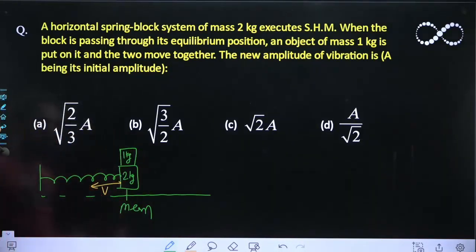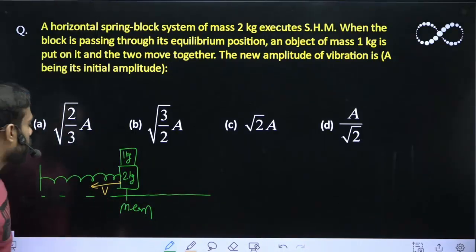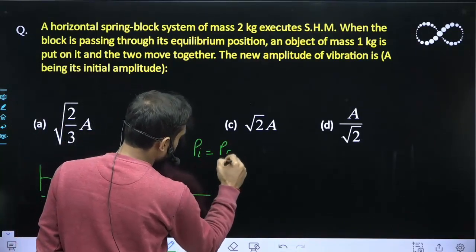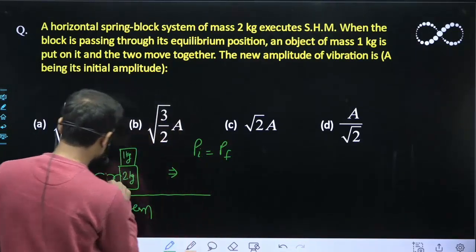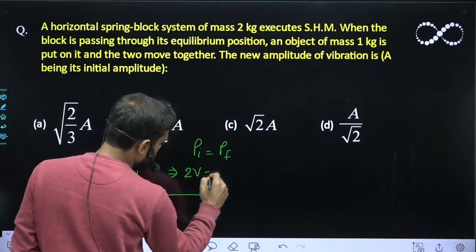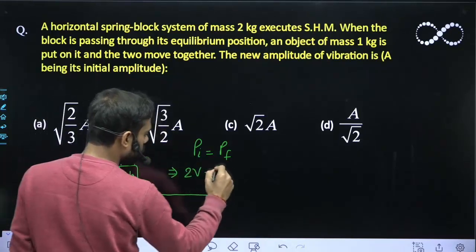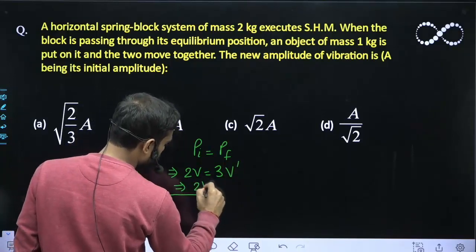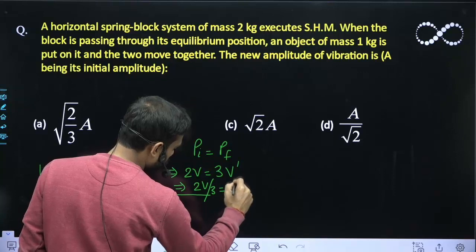Obviously, the external force net is zero, so the linear momentum will remain conserved. So P initial must equal P final. P initial equals 2 into V and that must equal final momentum, which is 3 into V dash. From here I can say this will become 2V upon 3 equals V dash.